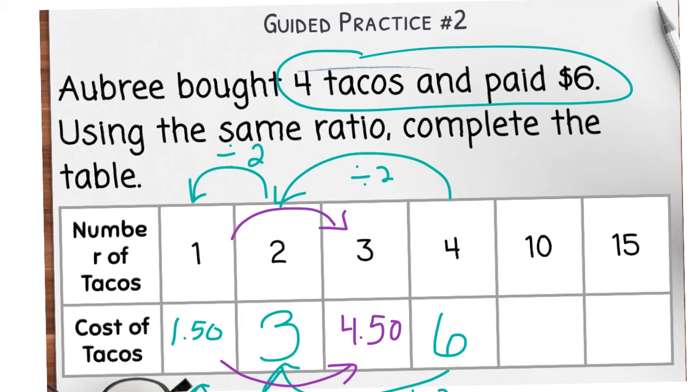Okay, so now to get to 10, we could use the two to get to 10. Two times five is 10. So three times five is 15.